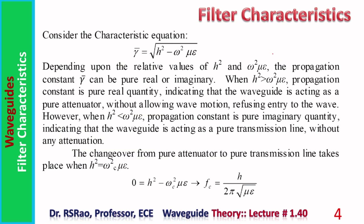Let us derive expressions for cutoff frequency and cutoff wavelength. Consider the characteristic equation: γ² = h² − ω²με, where γ is the propagation constant, h is the cutoff wave number, ω is angular frequency, and μ, ε are constitutive parameters of the hollow region medium. From this expression, depending upon the relative values of h² and ω²με, the propagation constant γ can be either pure real or pure imaginary.